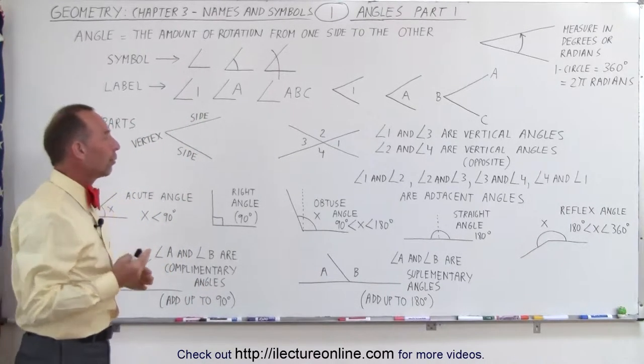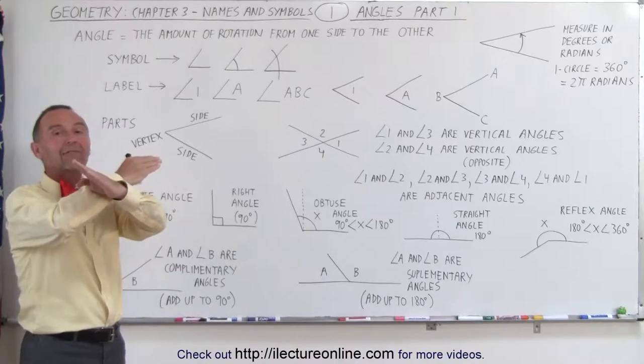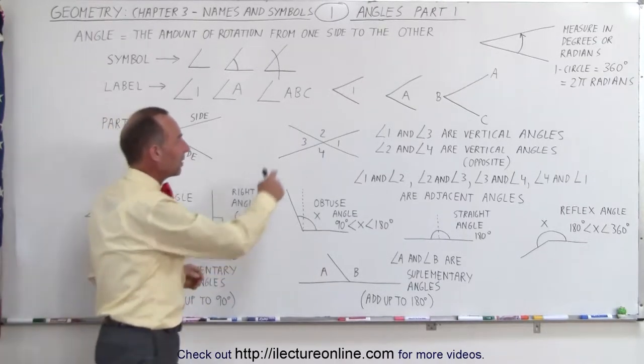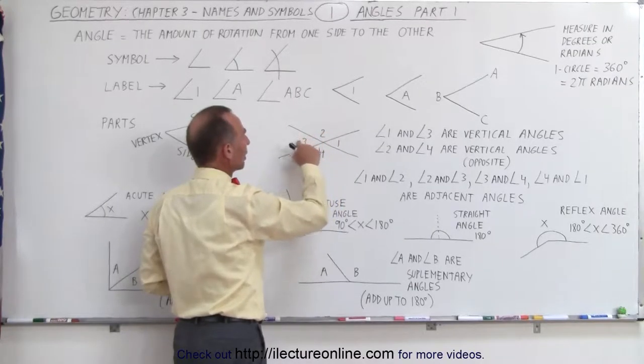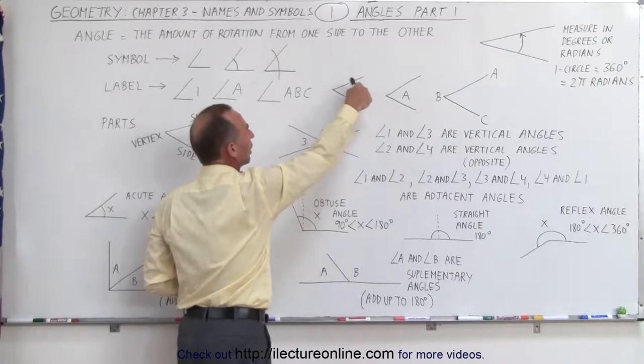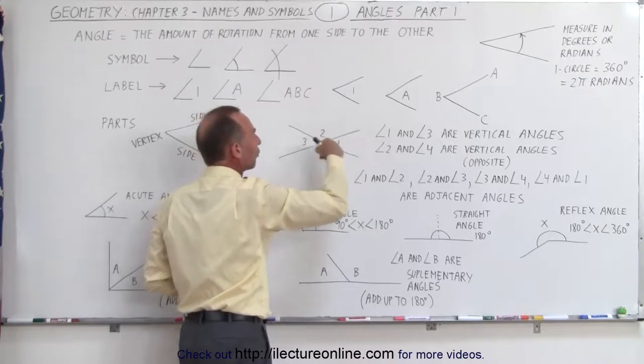Notice that angles can also be formed by taking two lines and having them intersect like this. So here we have an example. And notice this creates four angles. Angle number 1, number 2, number 3, and number 4. So we're using this notation here to notate those four angles.